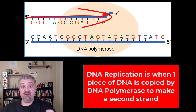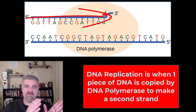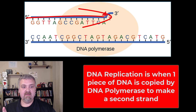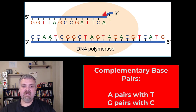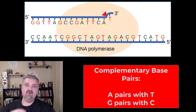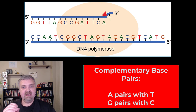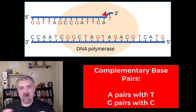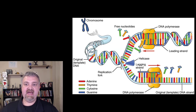DNA replication always occurs from the five prime direction to the three prime direction. The other key thing to note here is the complementary base pairs. DNA polymerase does its job because anywhere it sees an A, it knows the complementary base needs to be a T, and when it reads a G, it lays down a C. So A and T are complementary base pairs, and G and C are complementary base pairs.